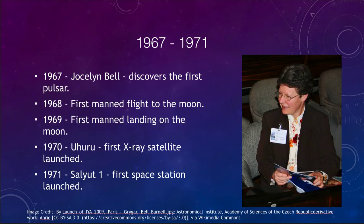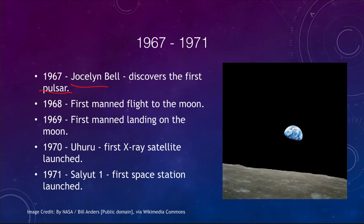Looking at the late 1960s into the early 70s, Jocelyn Bell discovered the first pulsar in 1967, looking at radio emissions. We'd studied the idea of neutron stars, but this was the first actual pulsar discovered. In 1968, just seven years after the first man in orbit, we had the first manned flight to the moon — the Apollo 8 mission — which traveled to the moon, went around it, and came back. They didn't land, but were the first people to see the Earth from the distance of the moon.